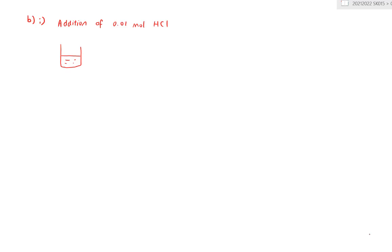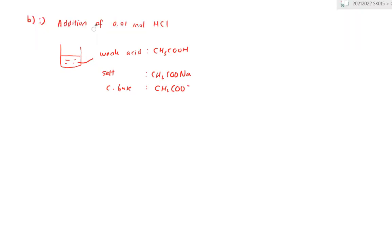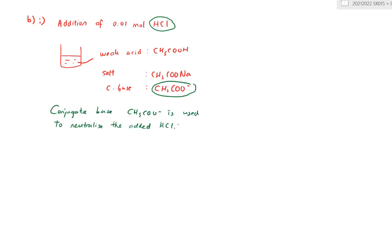You need to recall that in this question we have an acidic buffer. Inside this buffer solution we have the weak acid CH3COOH and the salt CH3COONa. Inside the salt, you are actually containing the conjugate base CH3COO minus, which is also considered a base. So when adding the strong acid, in the neutralization reaction, the base is going to neutralize the acid. The conjugate base CH3COO minus is used to neutralize the added HCl.